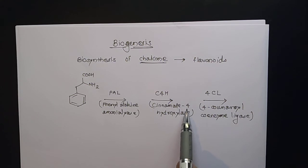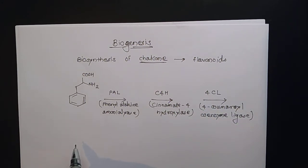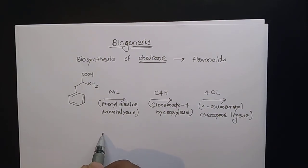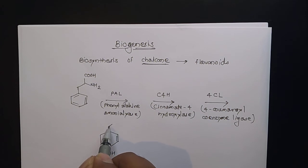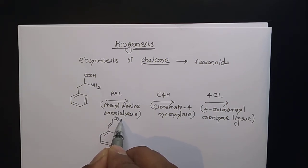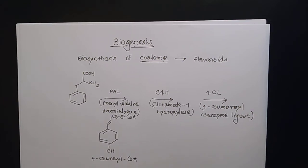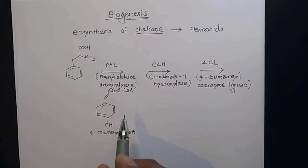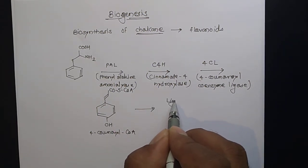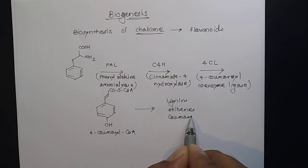So after phenylalanine we prepared cinnamic acid, and from cinnamic acid a p-coumaryl-type compound. The structure I will draw is the derivative of 4-coumaroyl CoA — written as CO-SCoA. And from this we have already prepared lignins, stilbenes, and coumarins.